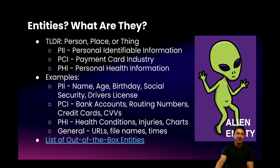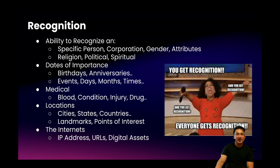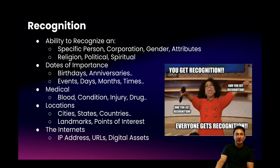You can find a list of our out-of-the-box supported entities on the Symbol platform by using the link provided. The main purpose for entity detection is for recognition. In order to do anything, we first need to be able to recognize these common entities. Higher-level order entities are things like a person's name, corporation or business name, a person's gender, or attributes like hair color. Other points of identification include religious affiliation, political, and spiritual. Collectively, these things can possibly be used to identify an individual in a meeting or in an email thread.